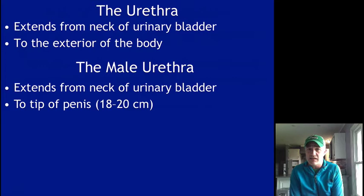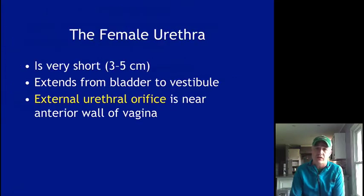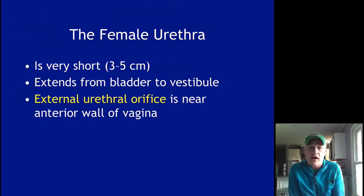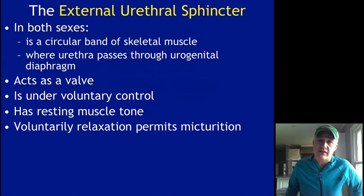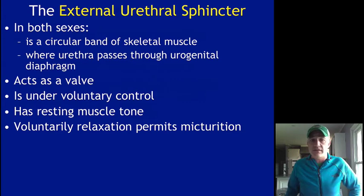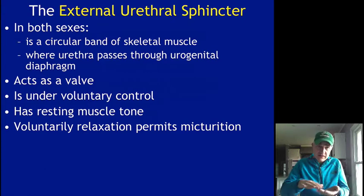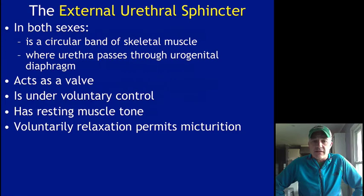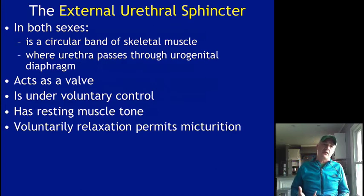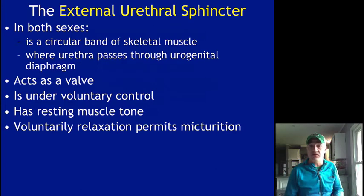The urethra in a male extends from the bottom of the bladder out to the tip of the penis — about 18 to 20 centimeters long. Because of that length, urinary tract infections are less likely in males. Females have a much shorter urethra of about three to five centimeters and definitely have a higher incidence of urinary tract infections. The external urethral sphincter is skeletal muscle wrapped around the urethra, part of the bottom of the pelvic cavity, under voluntary control with resting muscle tone. It is relaxation of that sphincter that triggers the micturition reflex and allows urination.